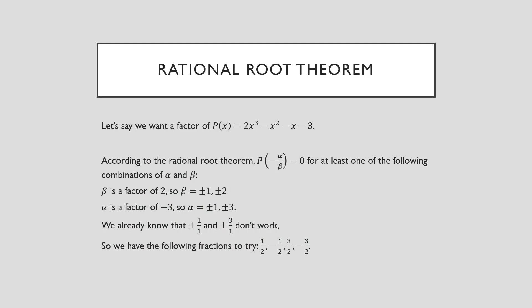So let's look at this cubic again. According to the rational root theorem, if we're going to find a factor for this cubic, we need combinations of alpha and beta. We're finding factors of the form beta·x + alpha. Beta could be the positive factors of the leading coefficient: one or two. We don't need to worry about negative values for beta, because the negatives come in when we determine alpha anyway. You only need to consider the positive factors of the leading term coefficient as possible values for beta.